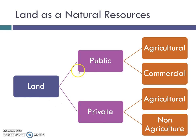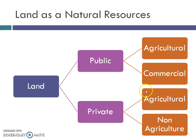Land could be either public or private. It could be agricultural land if you are producing agricultural products, or it could be commercial land if you are going for a showroom, shop, or factory. It could be owned by the government — you can rent it or lease it — or it could be owned by yourself or some other person.